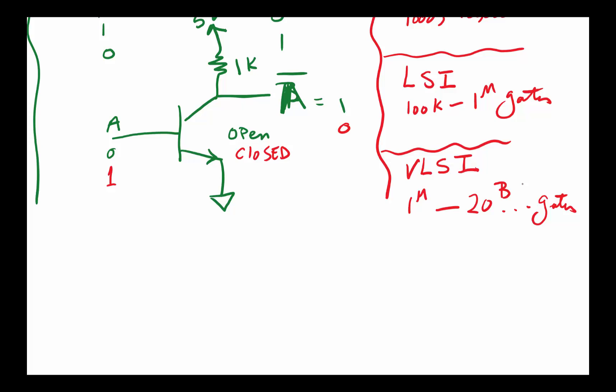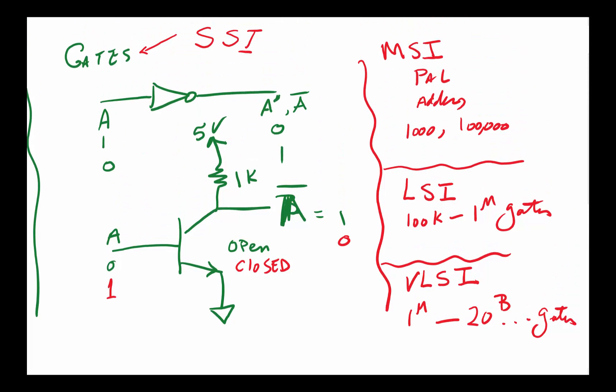That's the categorization we have for different scales. This gives you an idea of what a transistor is—the fundamental core component in designing computer systems. All our computer systems are based on a binary system. We use transistors to build gates, gates to build medium-scale integration devices, large-scale, and of course VLSI. Eventually, the largest devices we have—the processors in your computers—are all VLSI devices. That brings us to the end of the transistor to computer overview.